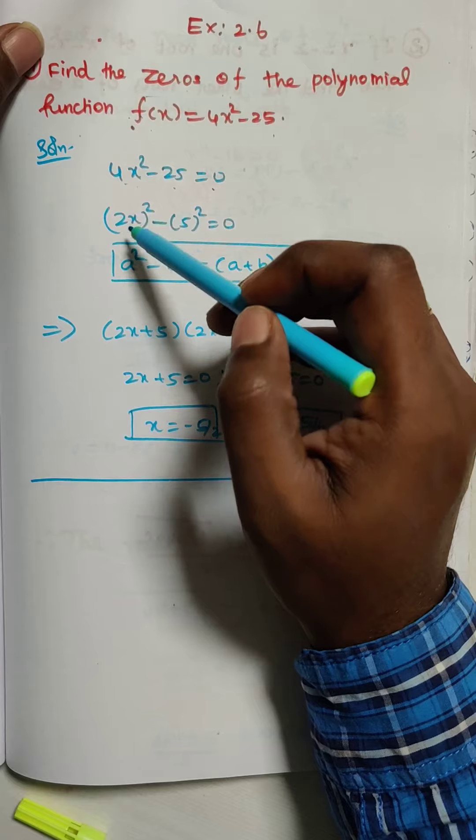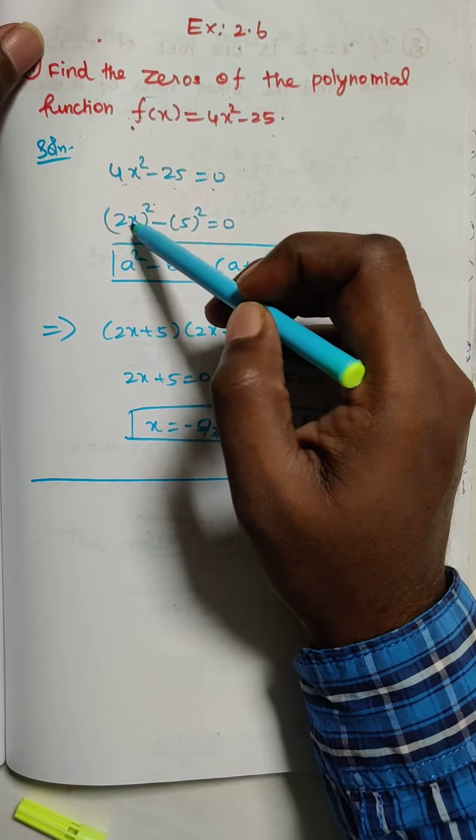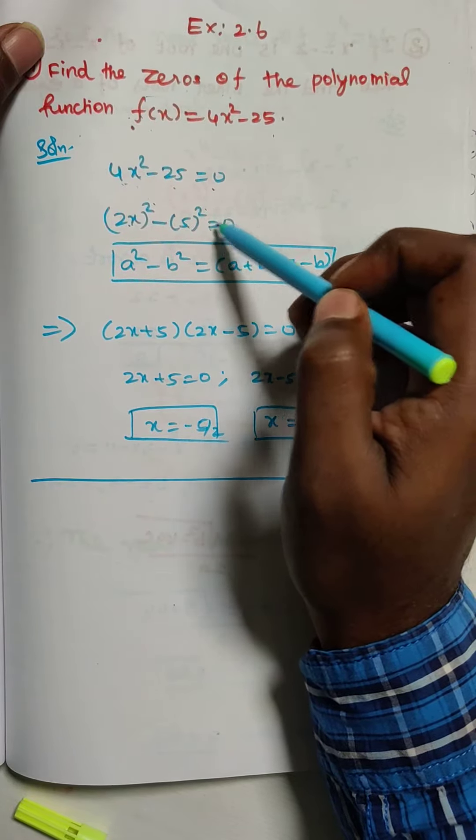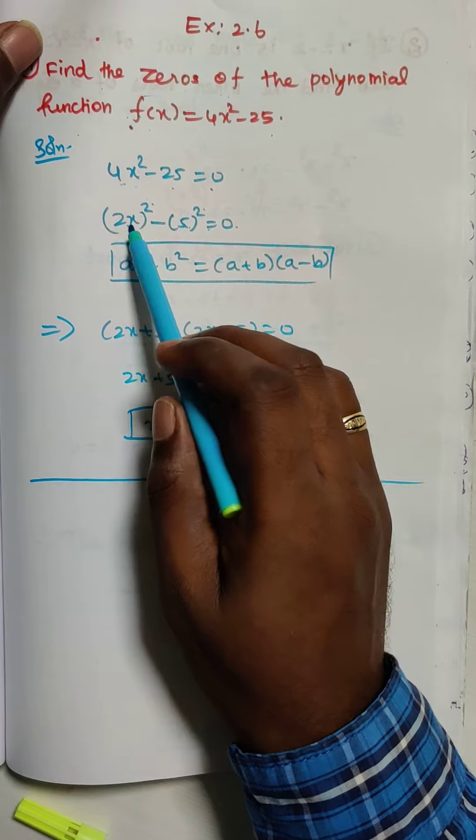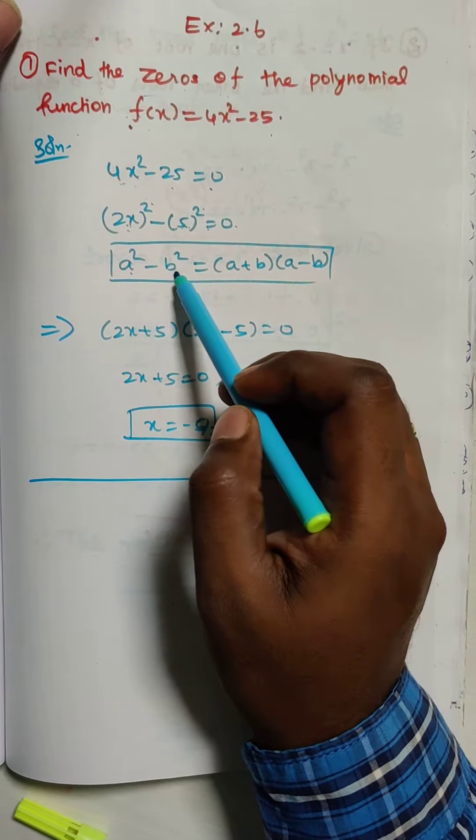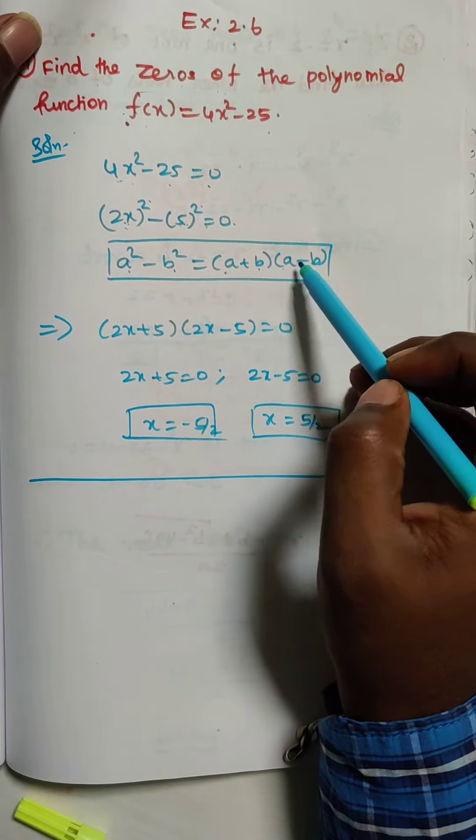4x² we can write as 2x the whole square, and minus 25 we can write as 5² equals 0. This is in the form of a² - b². So what is the formula? a² - b² = (a + b)(a - b).